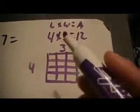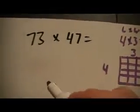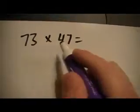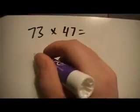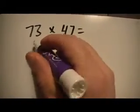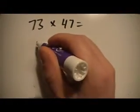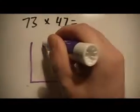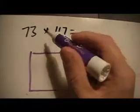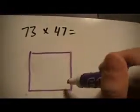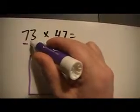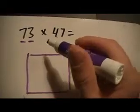For the area model, we just build on this idea. What they're going to do is choose either factor to go on top or bottom — it doesn't really matter. So let's say I'm going to do 73 on top. I'll make my rectangle, and obviously this is not going to be to scale. All we have to do is pick apart each place value of each factor and separate them out.